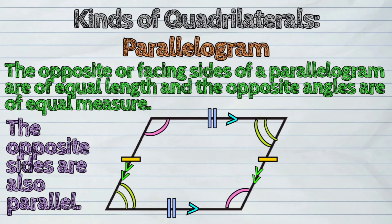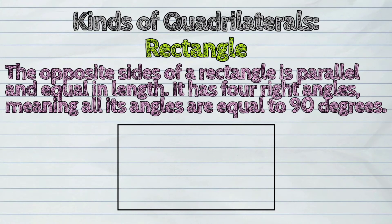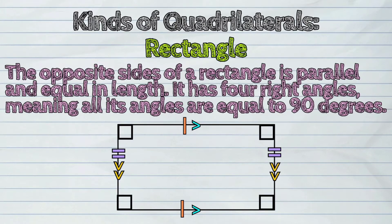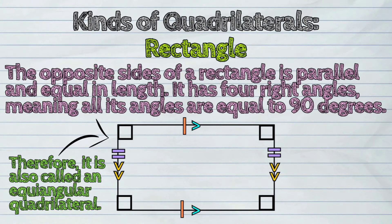Second, a rectangle. The opposite sides of a rectangle are parallel and equal in length. It has four right angles, meaning all its angles are equal to 90 degrees. Therefore, it is also called an equiangular quadrilateral.